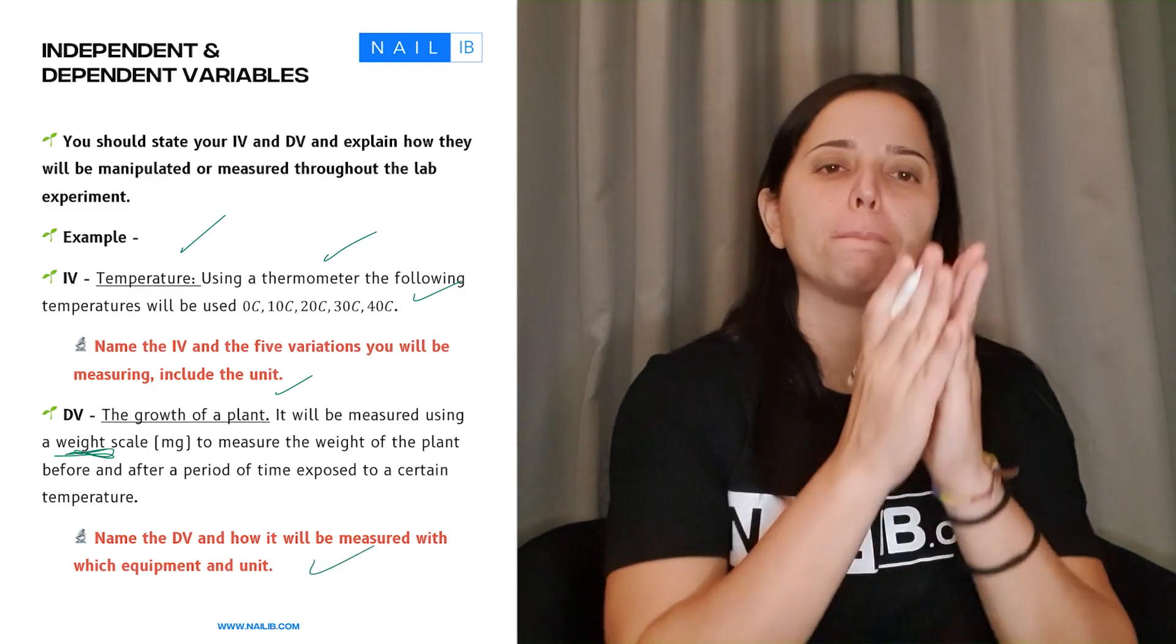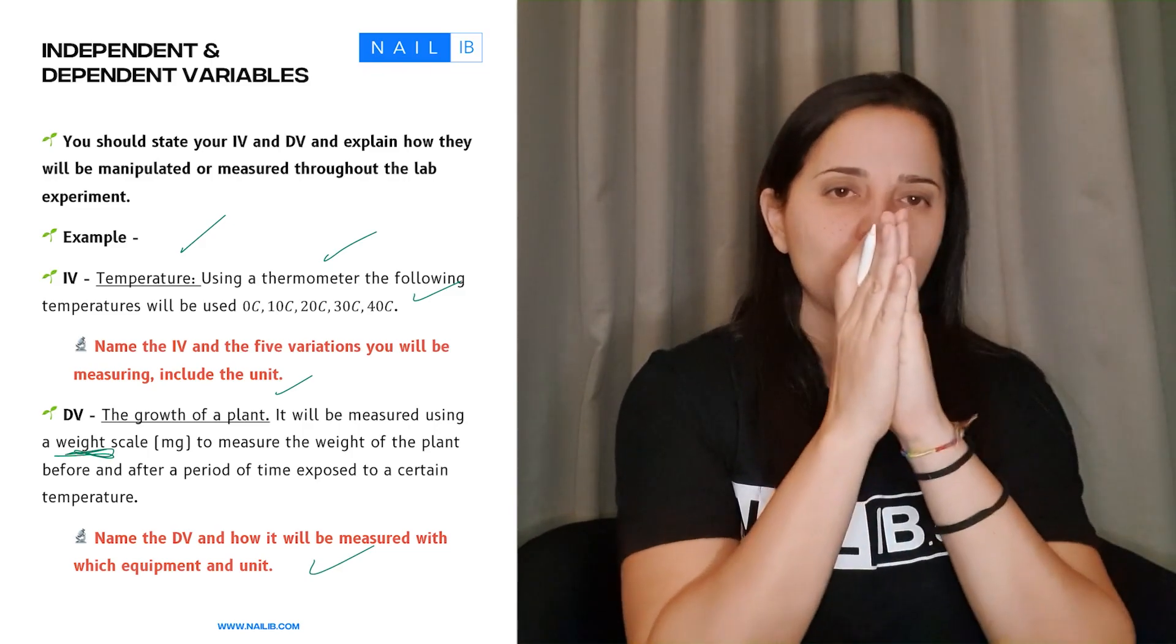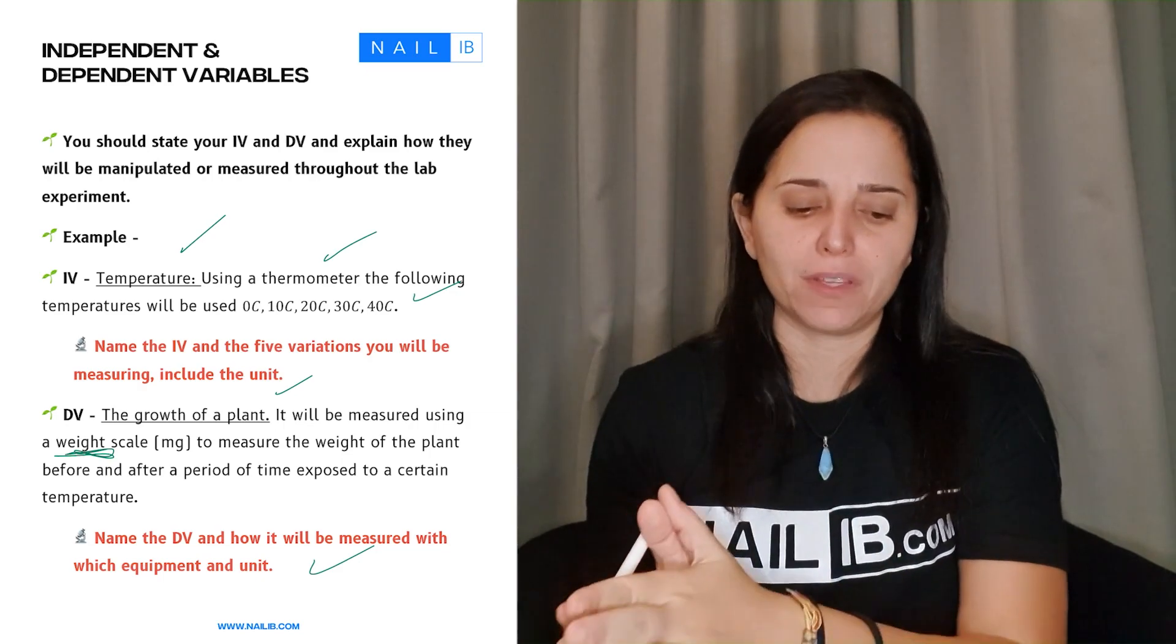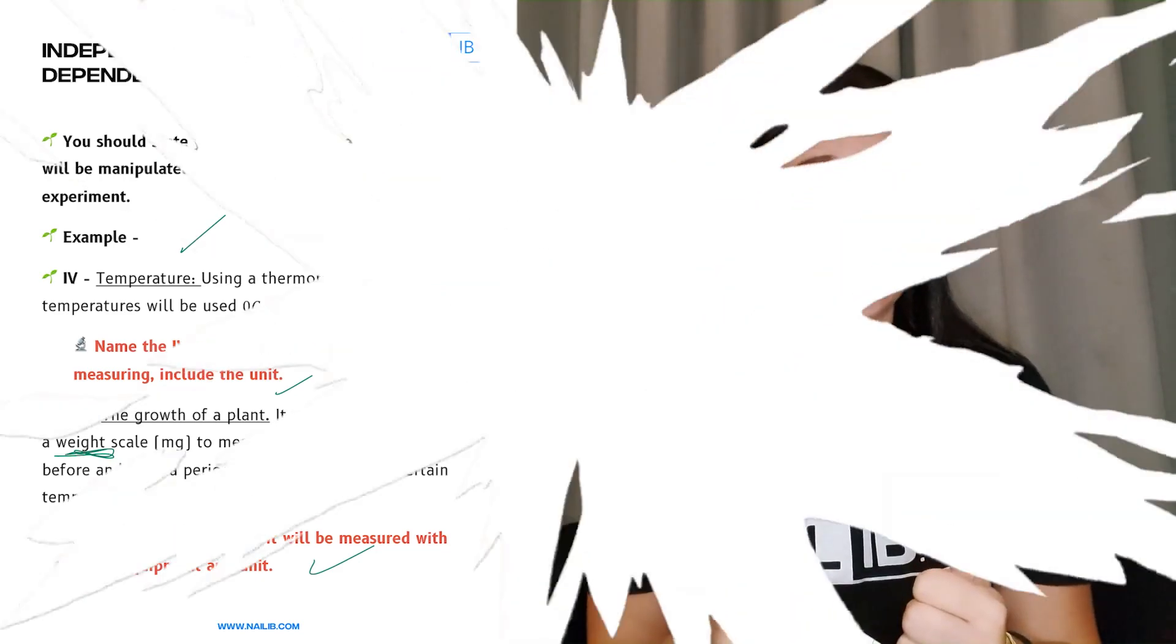So again, you have to put them, name of the variable, the variations there is for the independence, the units and equipment. If you do this, then you're good to go.